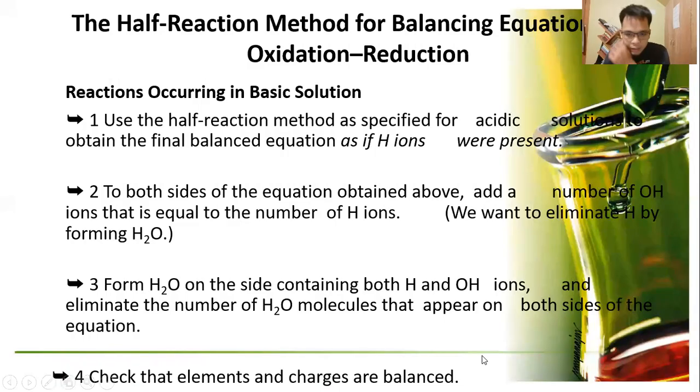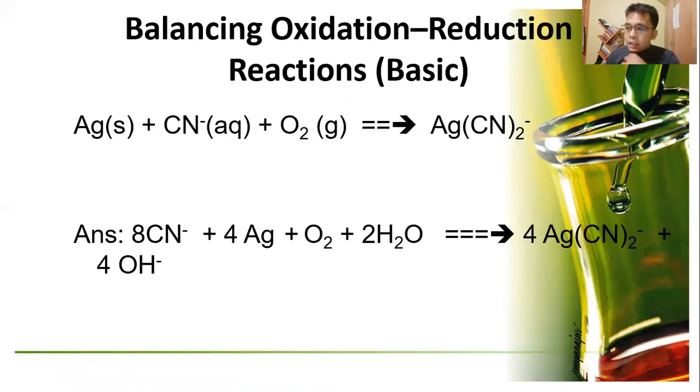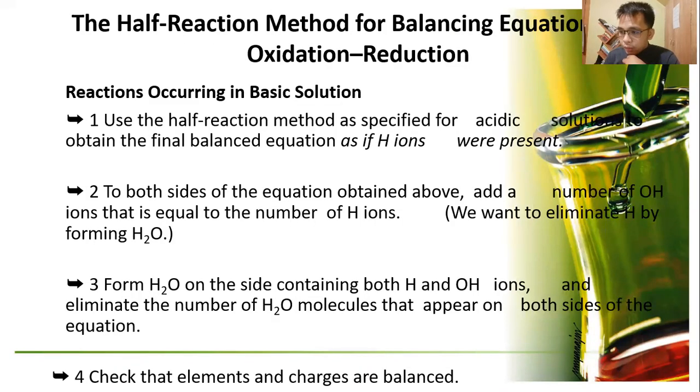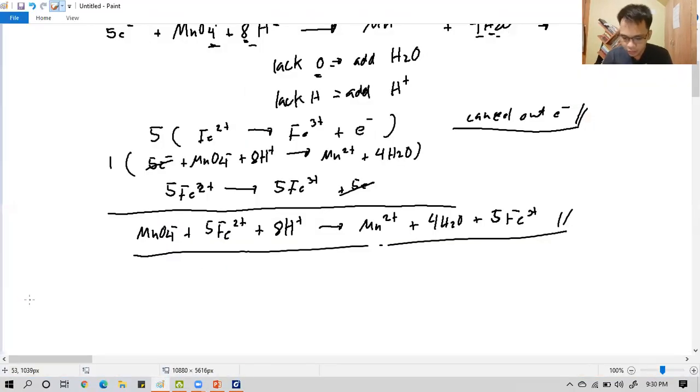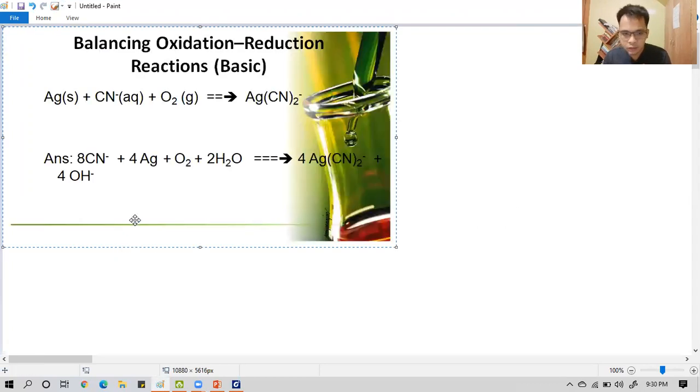We're done with the acidic condition. How about when our region is basic solution? First and foremost, you balance it in acidic and then in order to conform it into basic, add OH ion to neutralize the hydrogen ion. Then there will be excess hydroxide ions. Let's answer this problem here.